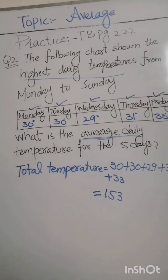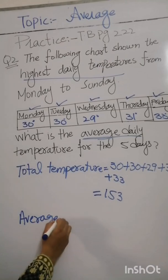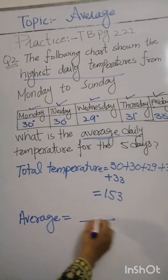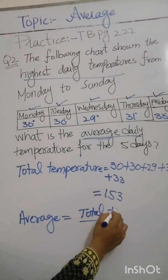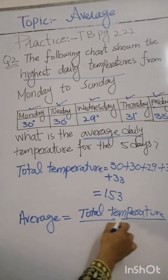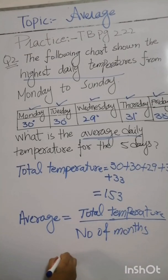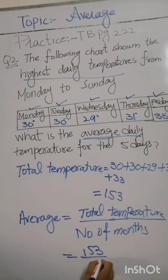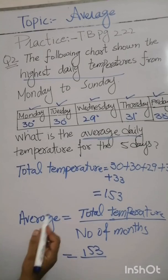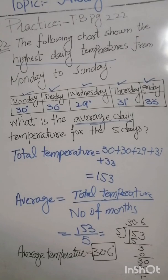Now we put the formula for finding the average for 5 days. Average equals total temperature divided by number of days. Total temperature we have is 153 and we have 5 days. When we divide 153 by 5, the answer we get is 30.6. So the average temperature is 30.6 degrees centigrade.